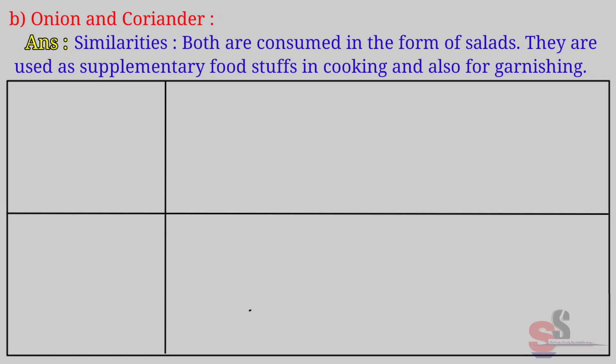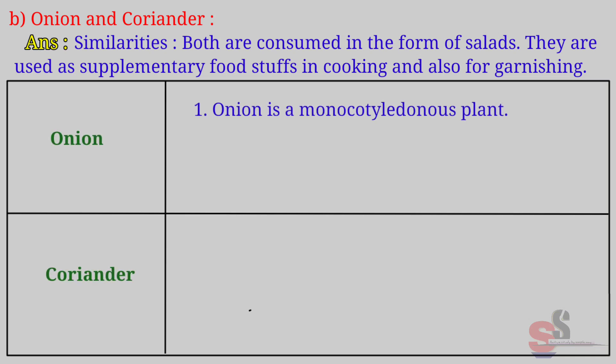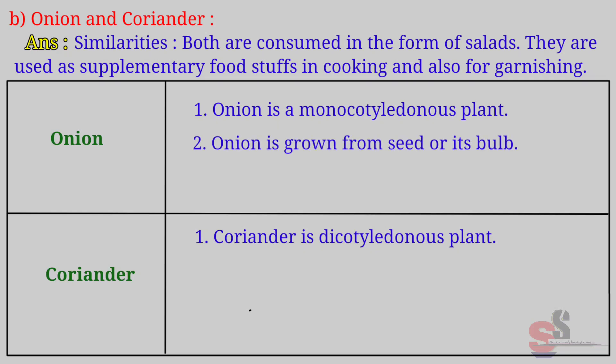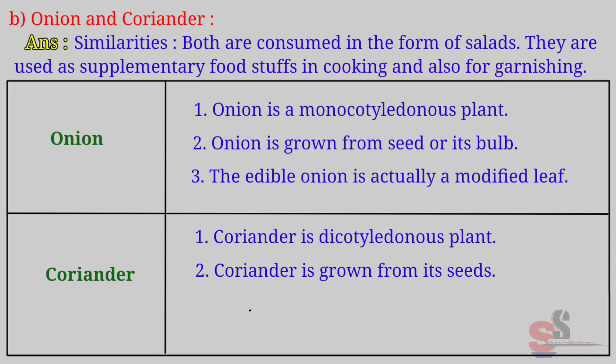They are used as supplementary foodstuffs in cooking and also for garnishing. Differences: Onion is a monocotyledonous plant; Coriander is a dicotyledonous plant. Onion is grown from seed or its bulb; Coriander is grown from its seeds. The edible onion is actually a modified leaf; Coriander leaves are the edible part.